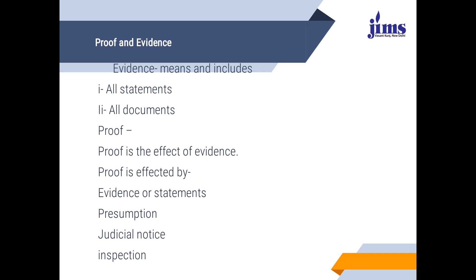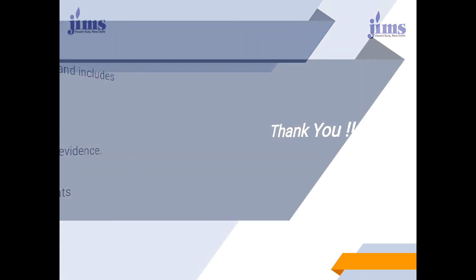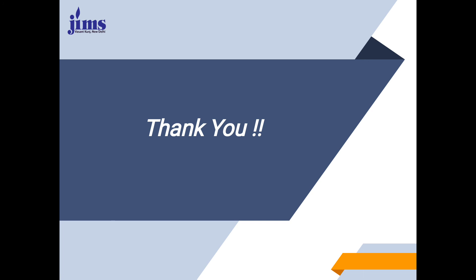Proof is also established through presumptions, judicial notice, and inspection by the court. Evidence and proof are not synonyms — proof is the effect of evidence. When evidence has established something, it is said to have been proved, and that is the proof of the particular case. Ultimately, what is established by the evidence is known as proof. That is all about the concept of proof and evidence. Thank you.